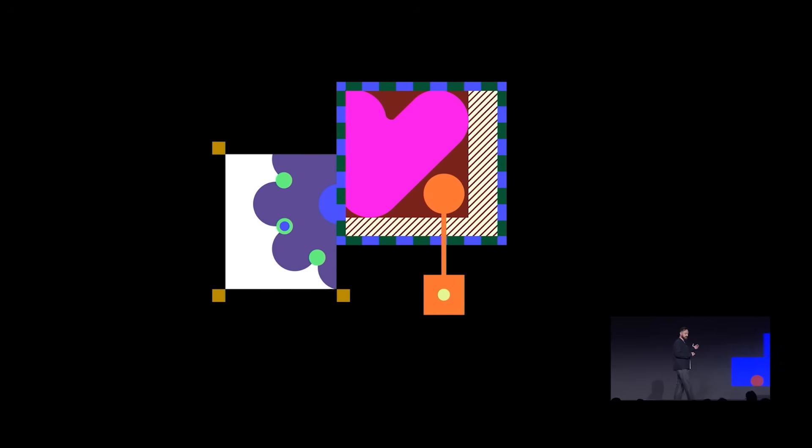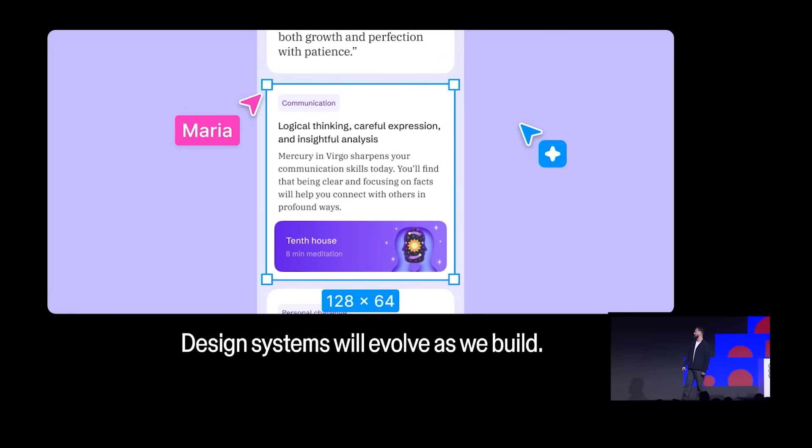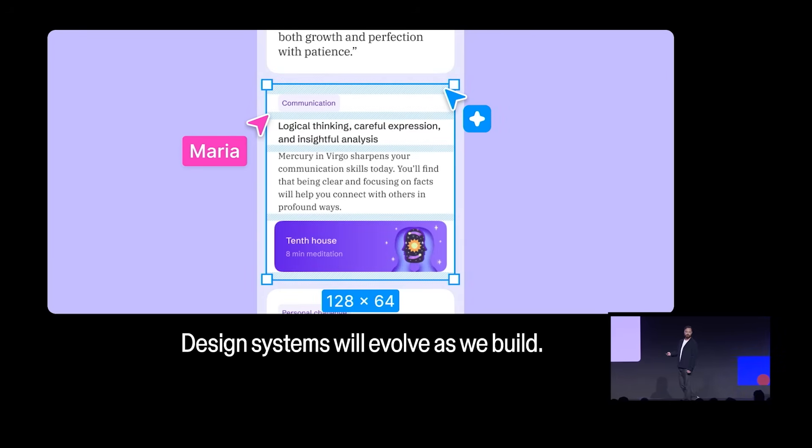Imagine a world where design systems evolve, maybe even automatically, alongside our products as we build them. What if Figma could understand the work your team is doing every single day? What if it knew about your spacing grid that you and your team talked about and decided to use, but you never documented? What if it knew how you laid out your card components just based on how your team's already done it, even if you didn't write documentation? Maybe it even knows how these patterns evolved over time. And maybe it might even suggest new components or documentation updates for you to add to your design system.